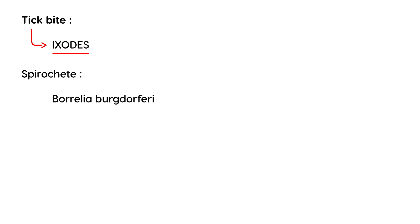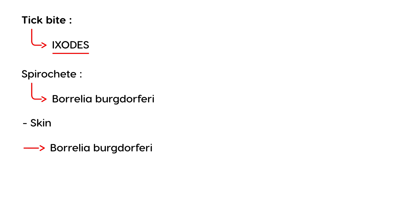So don't get confused: the tick's name is the Ixodes tick, and the spirochete — the organism that the tick introduces into your body — is called Borrelia burgdorferi. What happens next is it involves the skin, because that's where the tick bite occurs. Eventually this organism, the spirochete, the Borrelia, will enter into your lymphatic system and later will disseminate into your bloodstream.